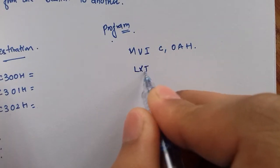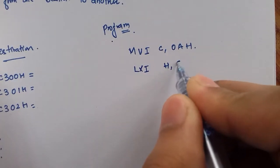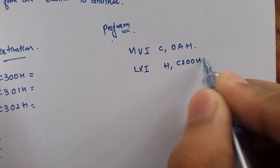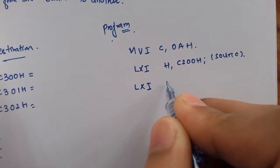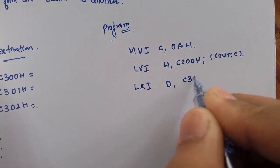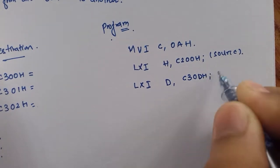So now we will initialize register pair C200H for source. And we have to initialize another register pair for destination. So let that be D for destination.